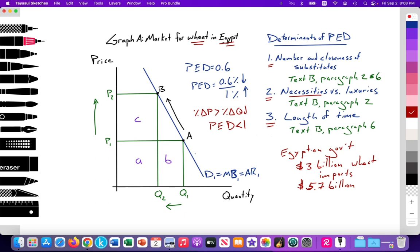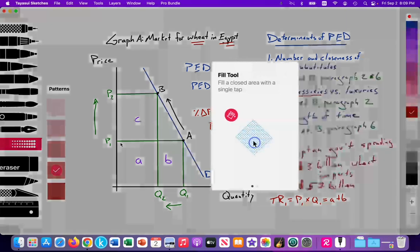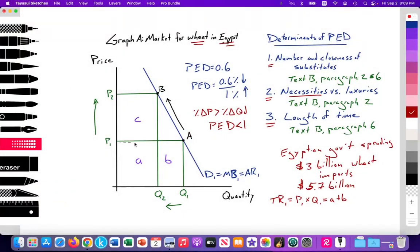What about the relationship between price and total revenue? Well, when we're at point A, we notice that total revenue, the initial total revenue one, is equal to P1 times Q1, which is equal to areas A plus B. So looking in Text C, we see the Egyptian government is spending $3 billion. Price times quantity, the value of areas A and B, could be approximately $3 billion for the Egyptian government in their spending for their wheat subsidy program.